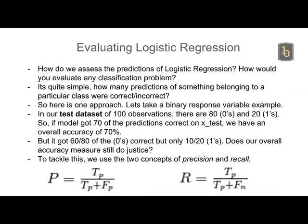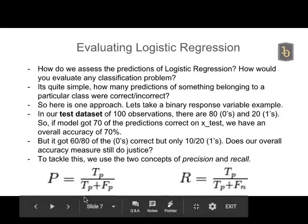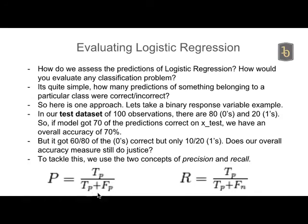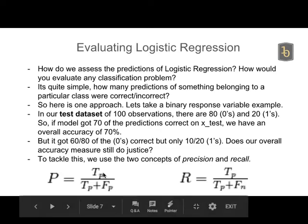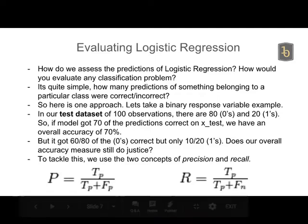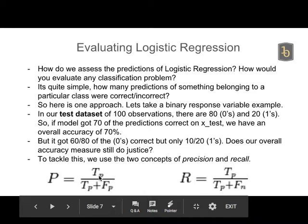Precision is TP divided by TP plus FP. A false positive is when I incorrectly predicted that someone was going to default. In my denominator I have the total number of positive predictions my model made; in the numerator I have the correct positive predictions. In this example, true positives were 10 and false positives were also 10, giving 10 out of 20.